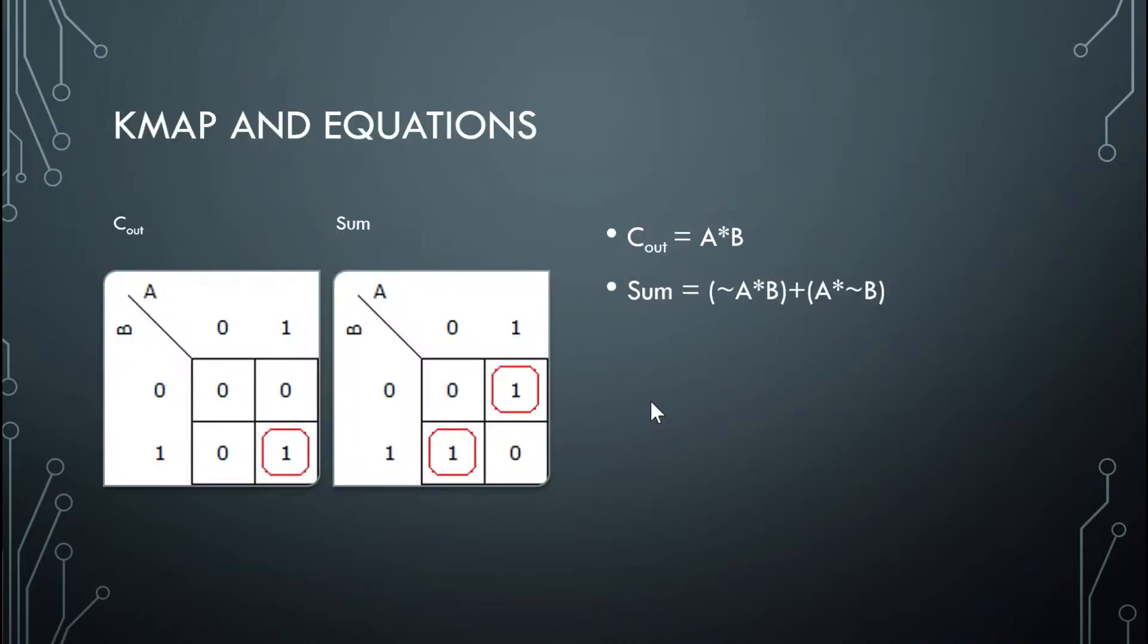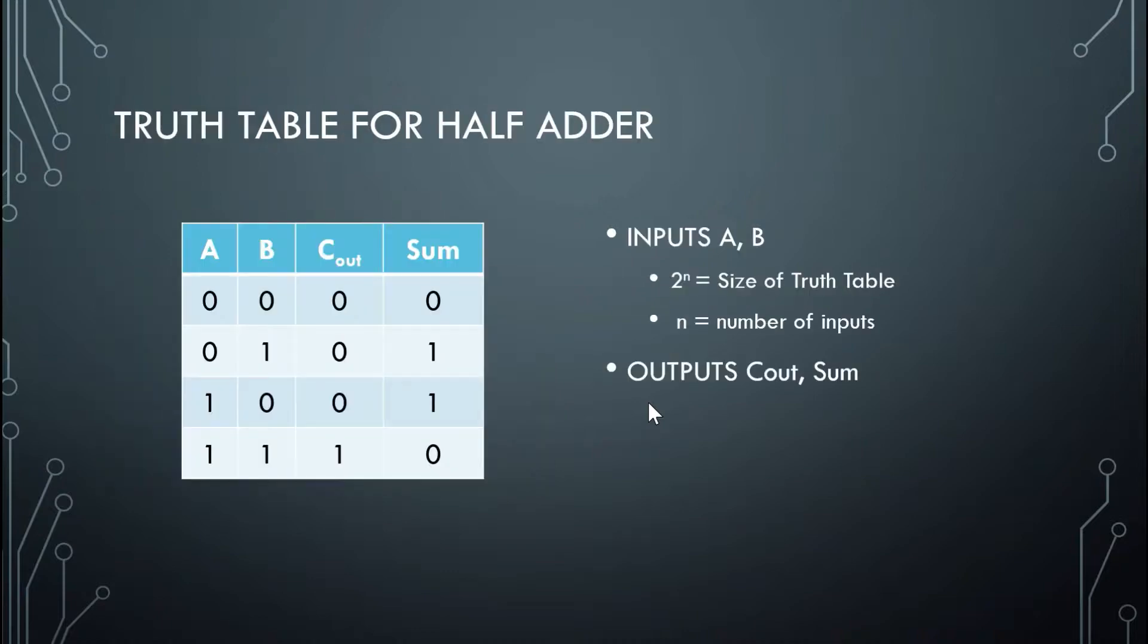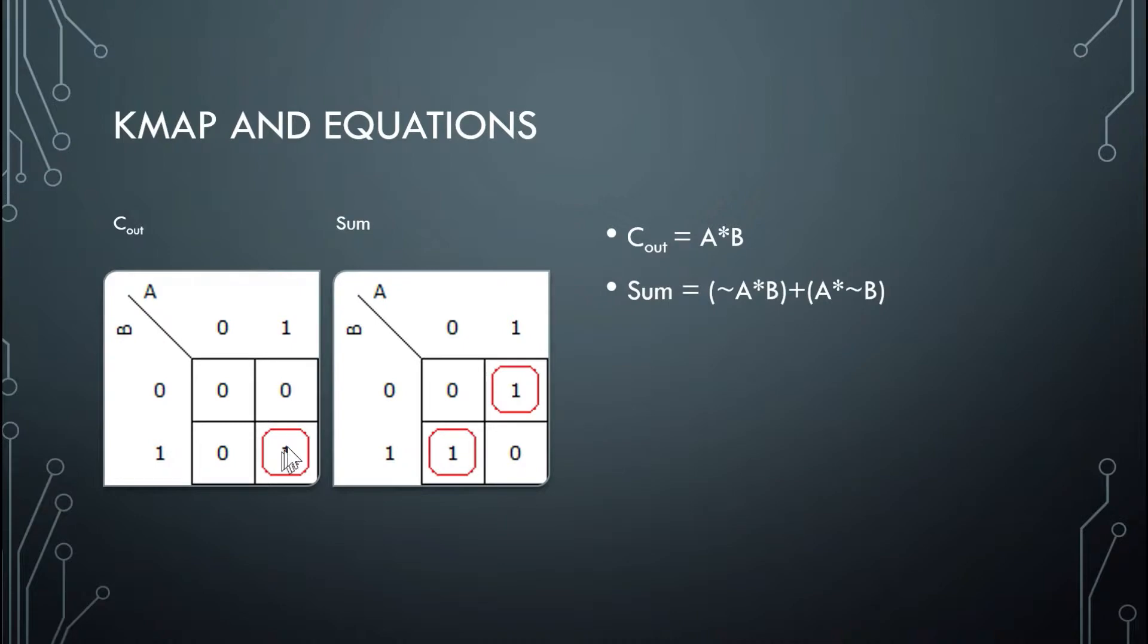Now we can use the truth table to make a K-map and see if we can make any reductions. In this case, we can't make any further reductions, but we'll go through the steps anyways. So we need to know when Cout is high. And it's only high when A and B are high. So we're going to go to that spot on the K-map and place a 1, and then fill in the rest with zeros.